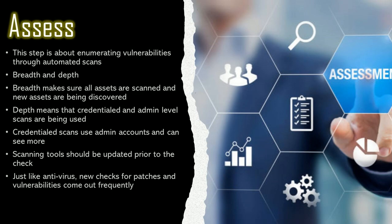Step three is Assess. This step is all about enumerating vulnerabilities through automated scans and doing it continuously. This involves breadth and depth — breadth meaning that every asset should be scanned with new assets being discovered, and depth means that credentialed and administrator-level scans are being used.